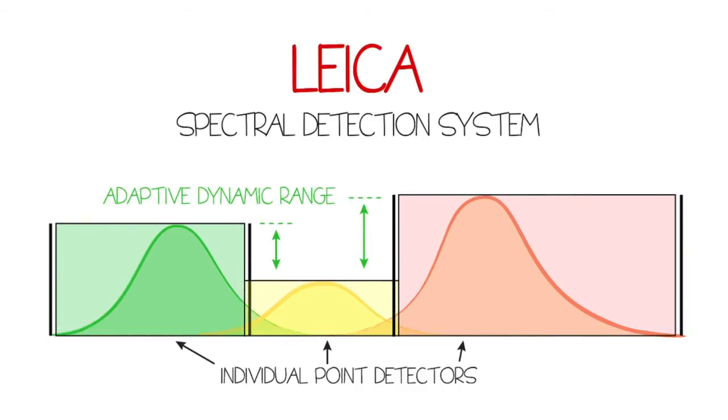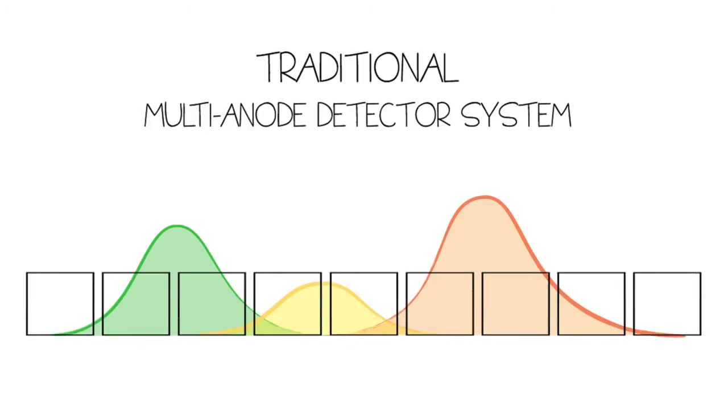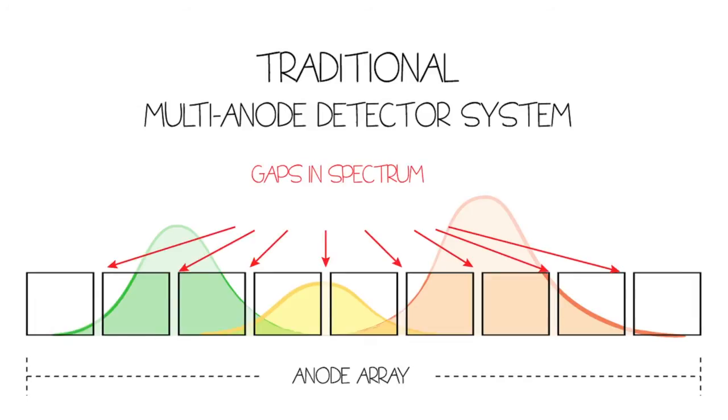By comparison, the commonly used multi-anode detector represents a less efficient approach to spectral detection. In this single detector system, 32 fixed anodes are arranged side by side with detection gaps between neighboring anodes, where the gaps between anodes result in a direct loss of light.